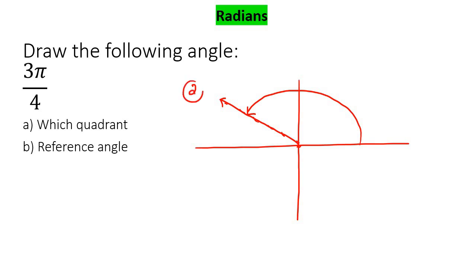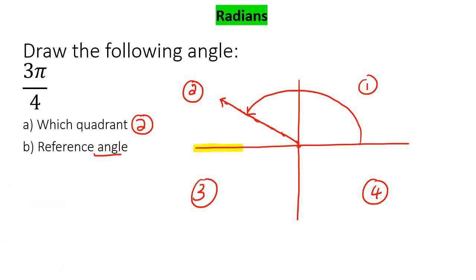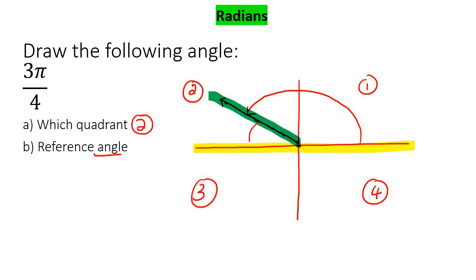That's quadrant 2, right? Because we know that's quadrant 1, that's quadrant 2, that's quadrant 3, and that's quadrant 4. So the next thing we need to do - since we are in quadrant 2 - is find the reference angle. What we do is always highlight this axis and then this axis, and the reference angle is the one that is in between those two.